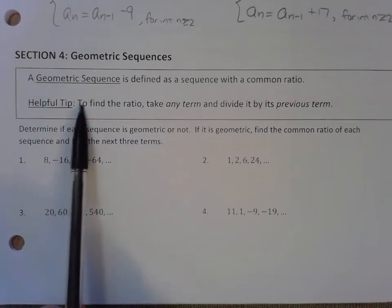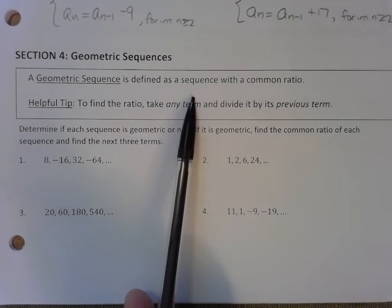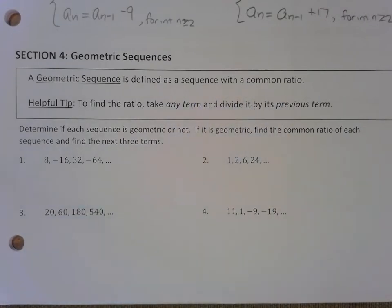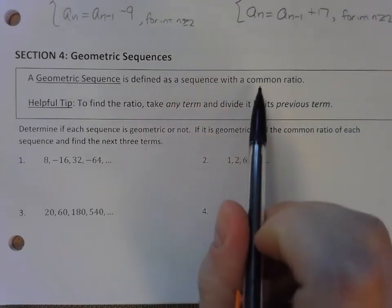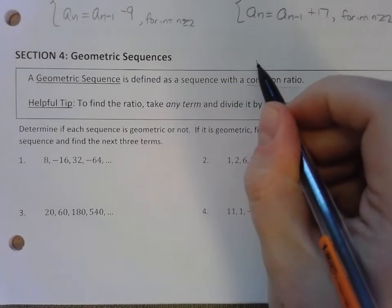As described above, a geometric sequence is defined as a sequence with a common ratio. Now a common ratio means that it's being multiplied instead of being added or subtracted. Where we had common differences in arithmetic, your common ratio is a number that you multiply by, which we are going to call r.